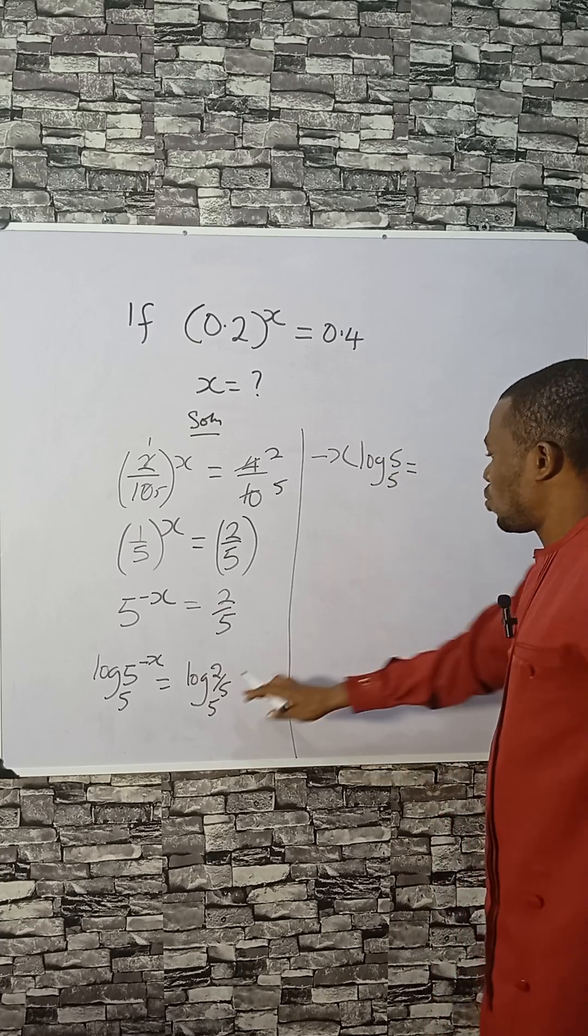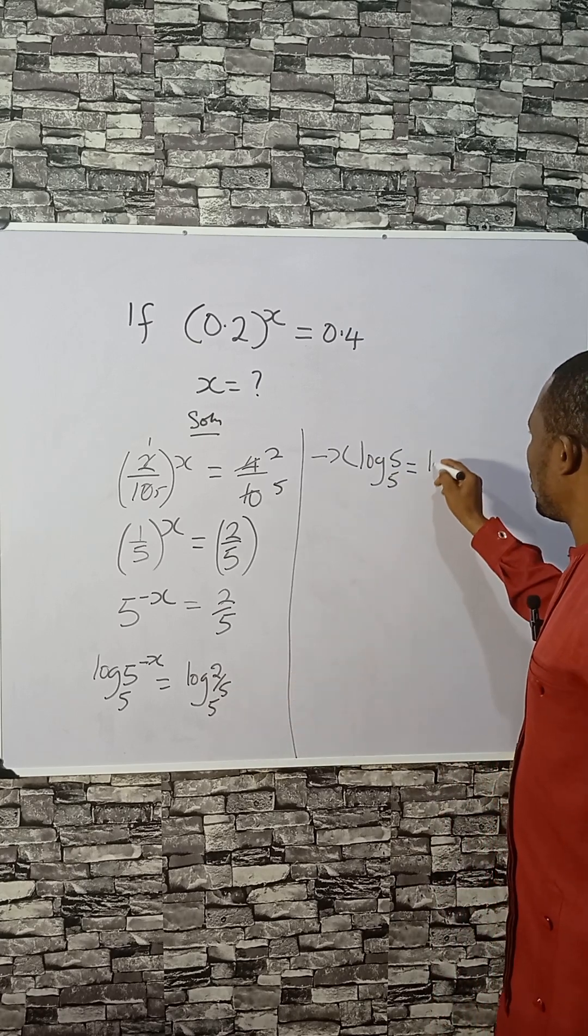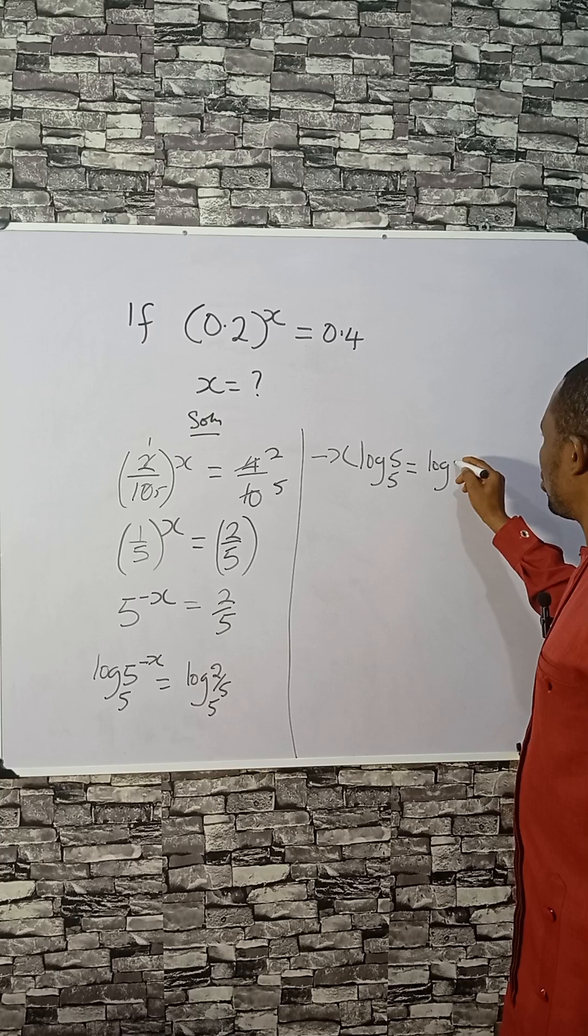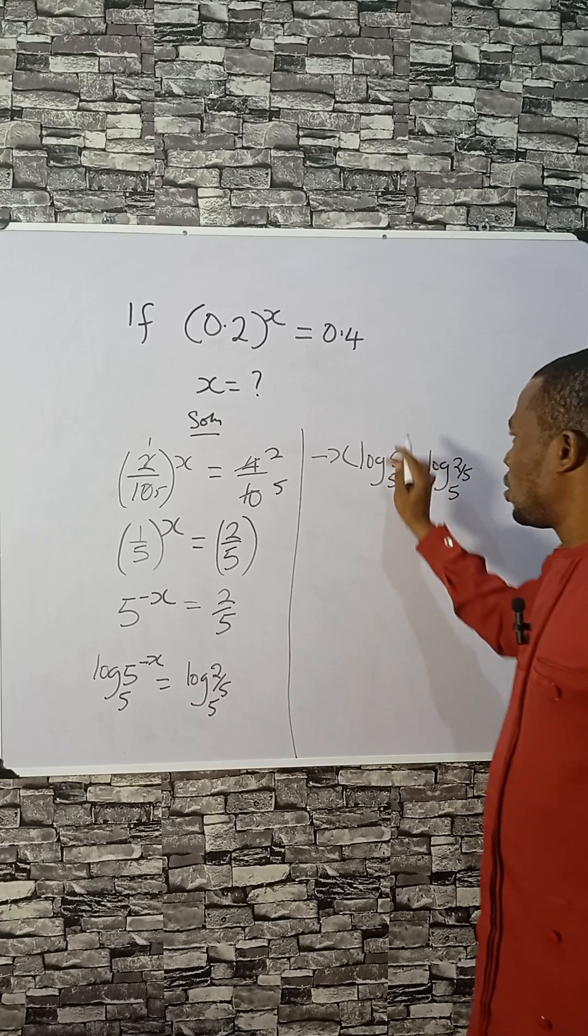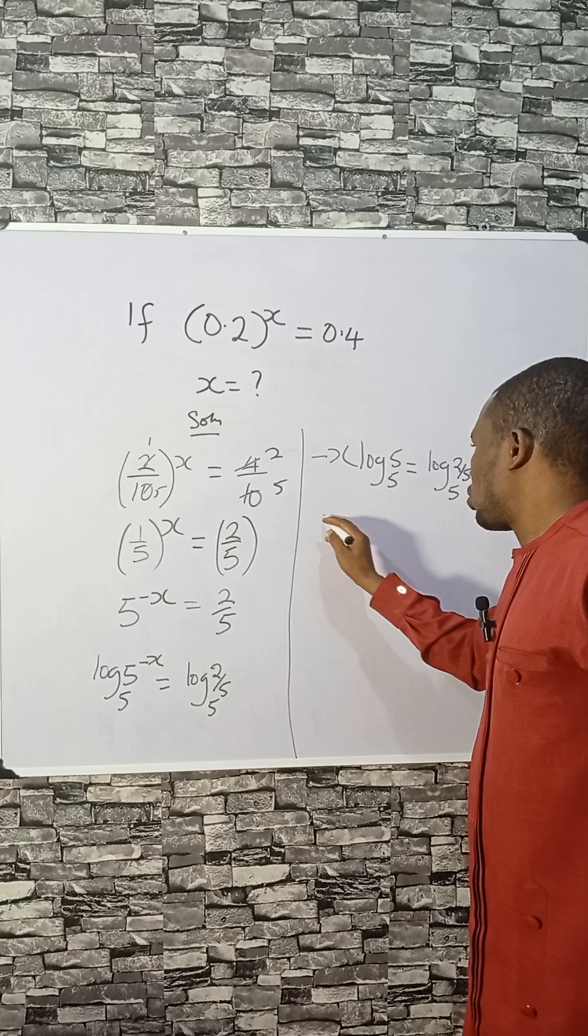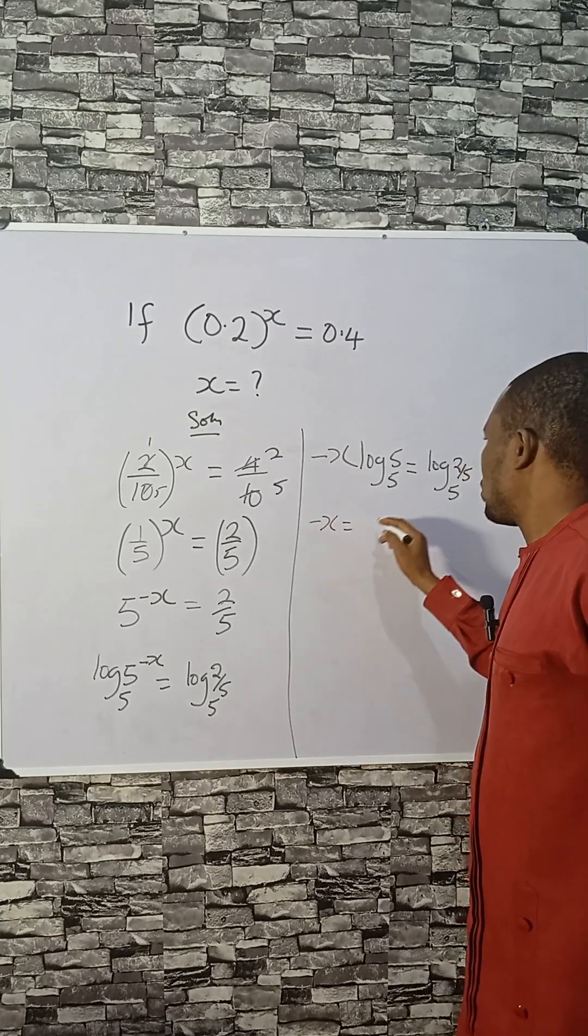Log 5 base 5 equals log 2 over 5 base 5. Log 5 base 5 locked with base minus x is 1.